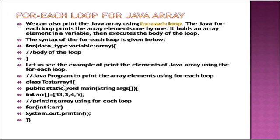Let's look at an example using the for-each loop. We take a class testArray1 with the main method and declare an array int a[] = {3, 3, 4, 5}. This array is iterated using a for-each loop: for (int i : a). Each data element stored in the array is held in i, and finally, we print the value of i on the console.